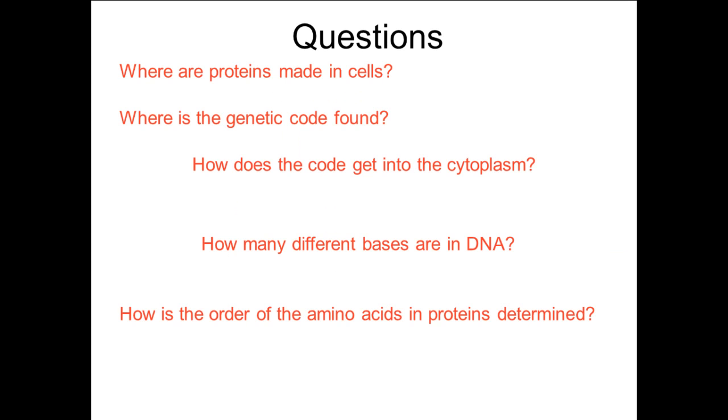And so to review, where are the proteins made in the cell? They are made in the cytoplasm. And so the genetic code has to leave, or a copy of the genetic code called mRNA has to leave the nucleus. And it's ribosomes that actually put together the protein or put together the amino acids in the correct order.